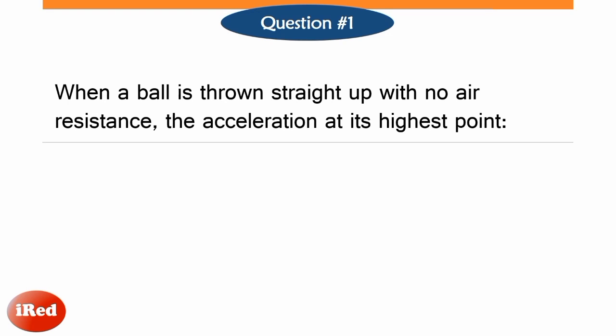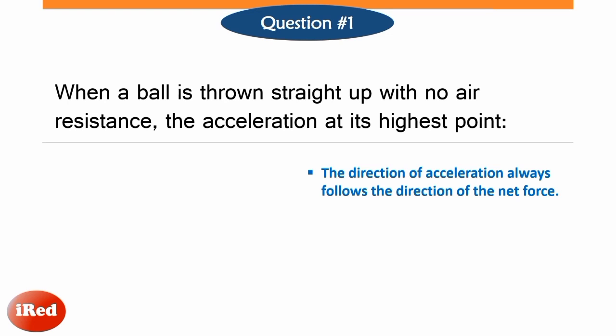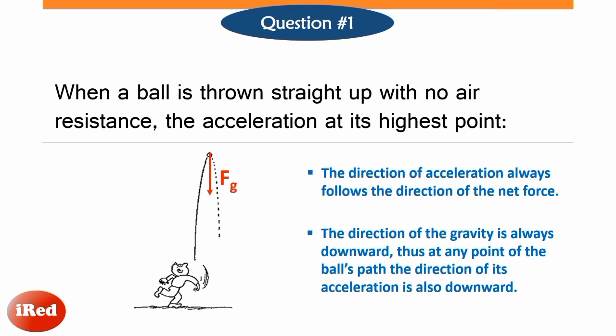Based on Newton's law of acceleration, the direction of acceleration always follows the direction of the net force. With no air resistance, when the ball is thrown vertically upward, the net force equals the force of gravity, since the only force acting on the ball throughout its path is gravity, which causes it to accelerate. Since the direction of gravity is always downward, then at any point of the ball's path, including at the highest position, the acceleration is always downward.